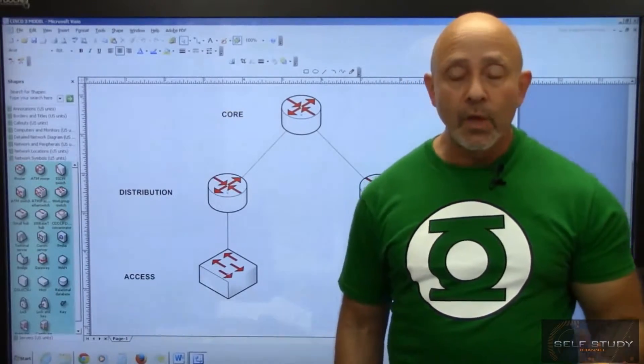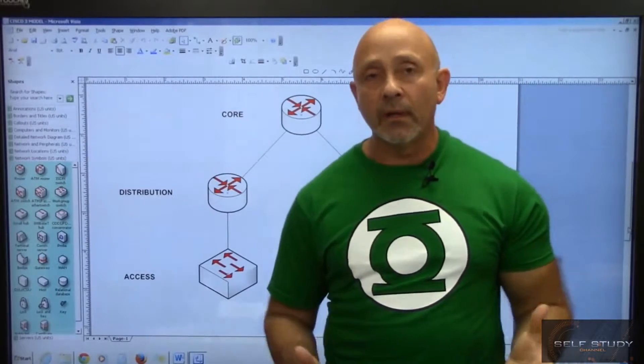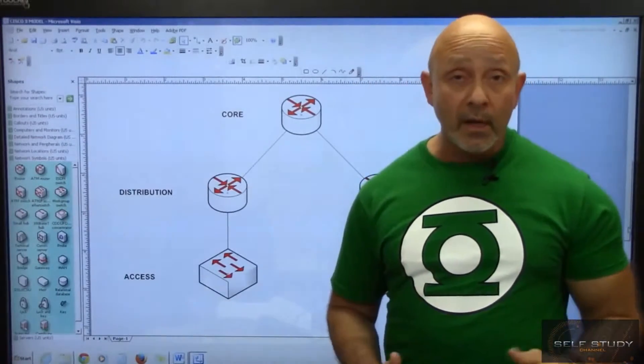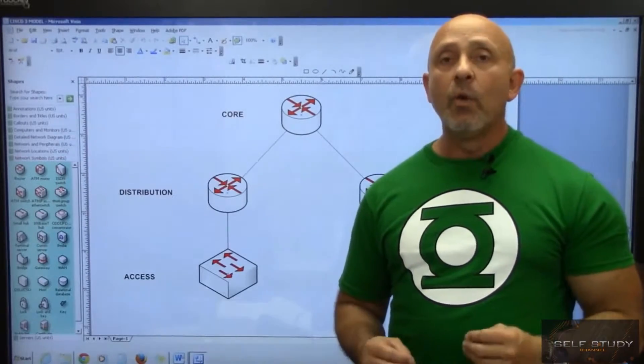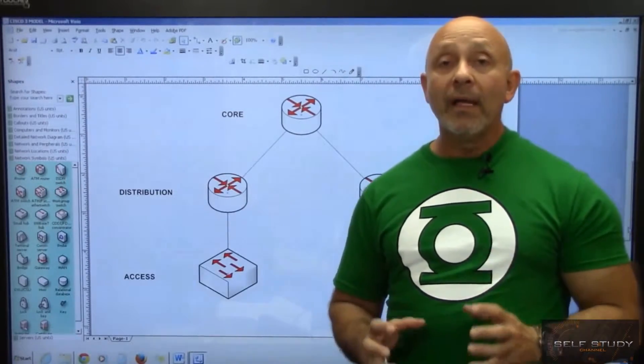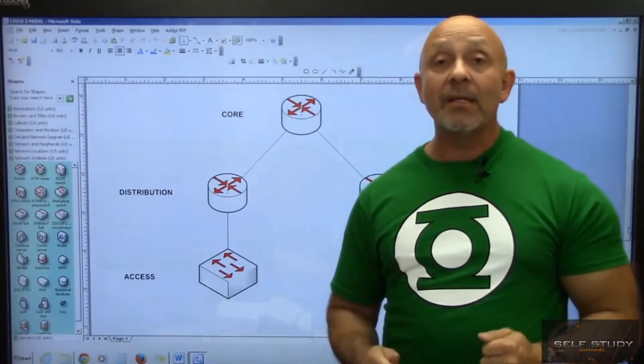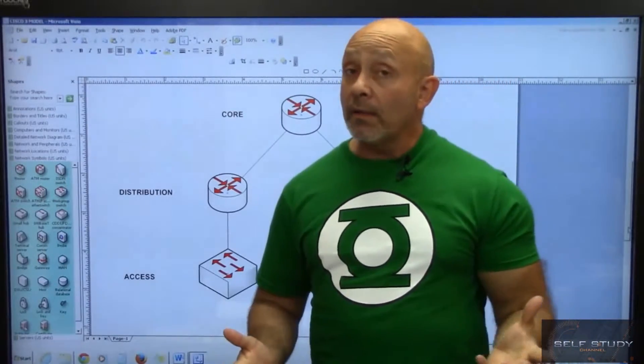What Cisco is trying to tell you here is: leave your core router alone. Any kind of policy-based routing or intra-VLAN routing—you want to make sure your core router's main purpose is speed, to get information across.